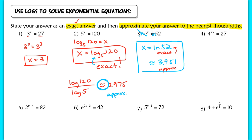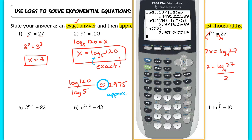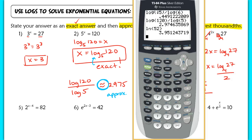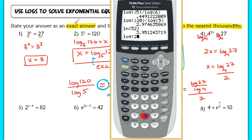In number 4, take log base 4 of both sides of 4 to the 2x equals 27. That cancels on the left, leaving 2x equals log base 4 of 27. To get x alone, divide by 2: x equals log base 4 of 27 over 2. Using change of base in the numerator, that becomes log of 27 divided by log of 4, and then that whole result divided by 2.